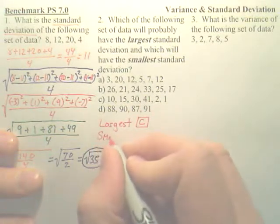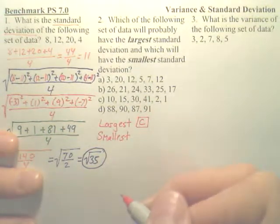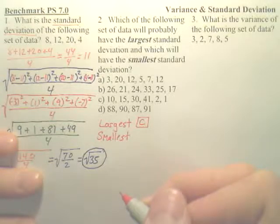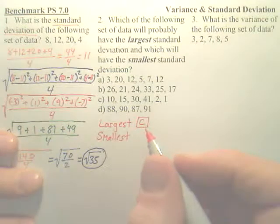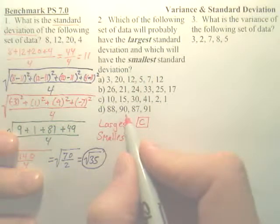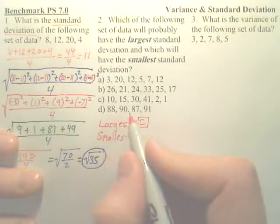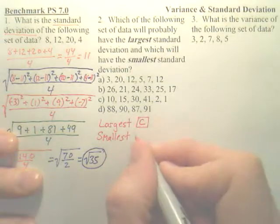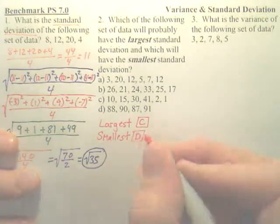Now, which will have the smallest standard deviation would be the data that's most closely knit, close together. All the information is very close. And if we look at all of them, these two look kind of close, but when you look at the last one, I mean, they're really close. All those numbers are very, very close together. So, the answer would be D, because all the data is very close.